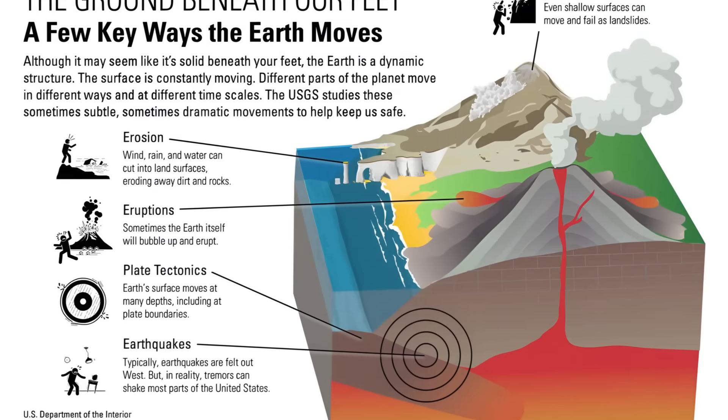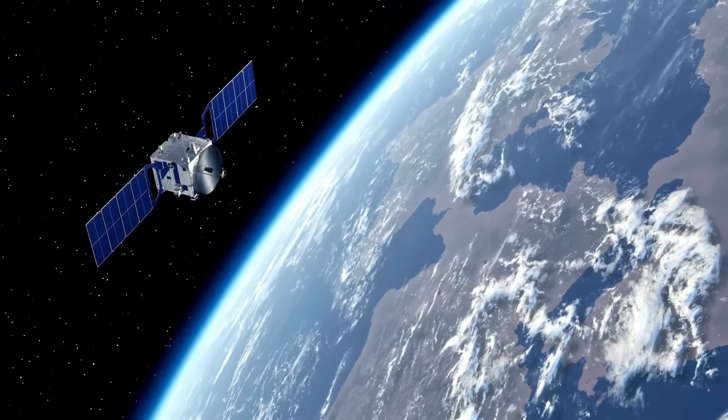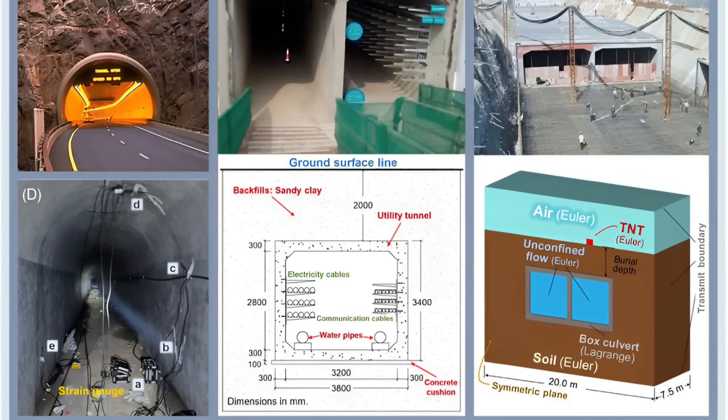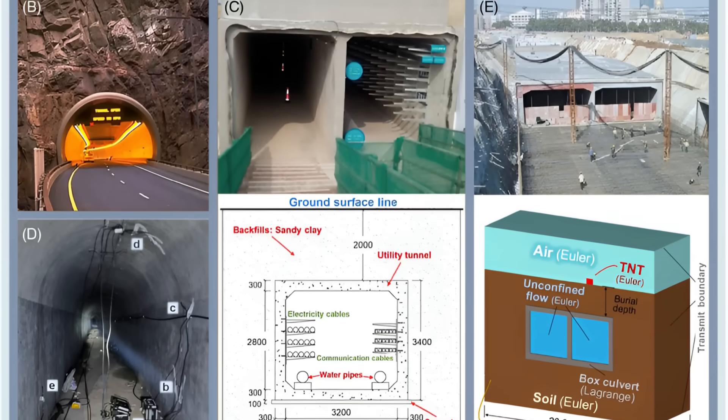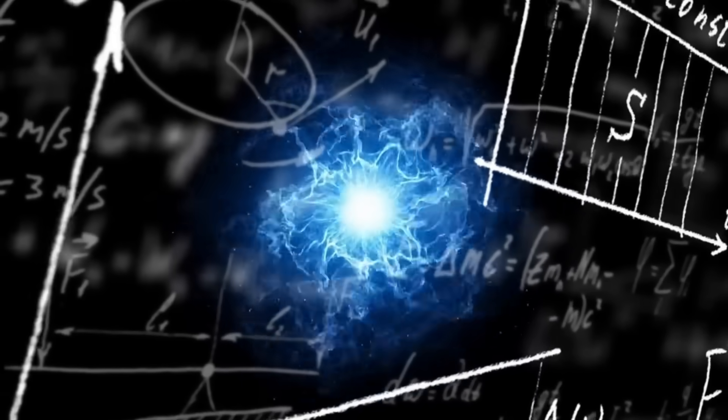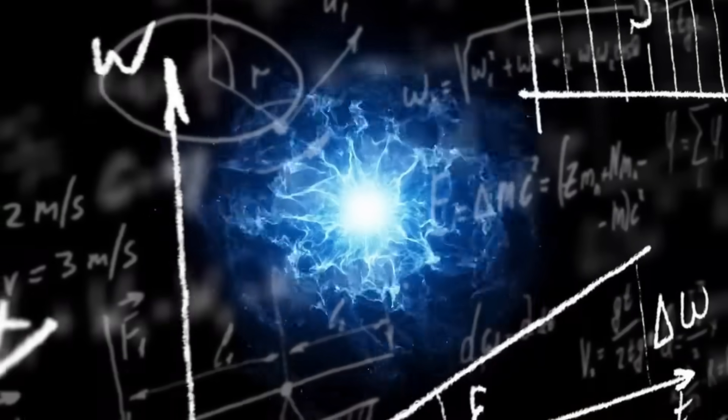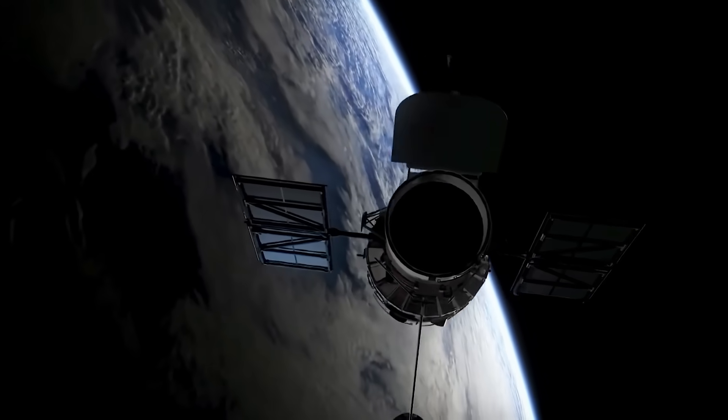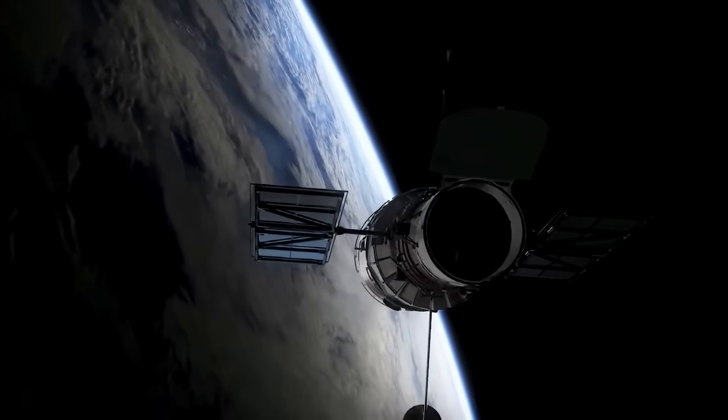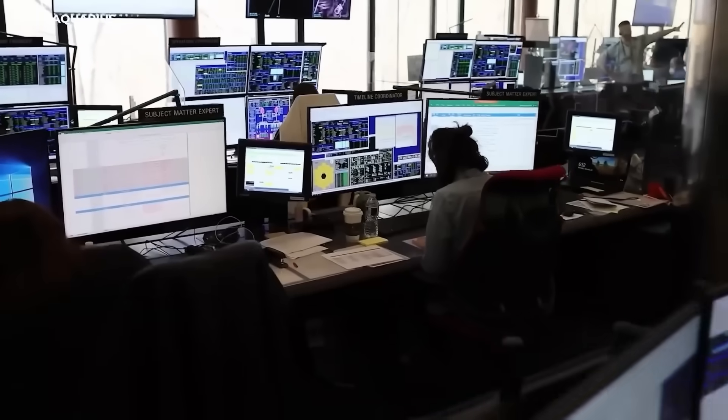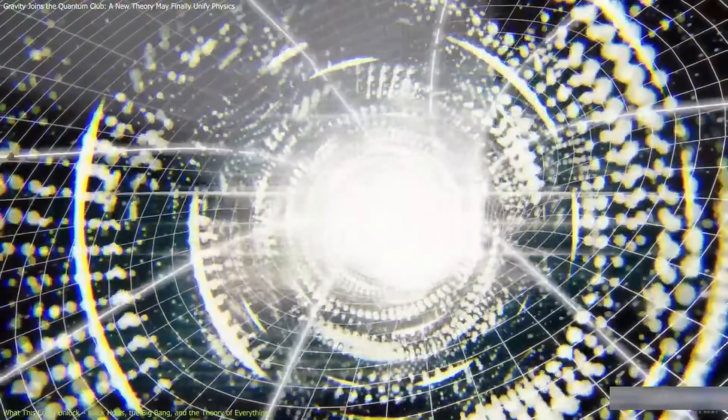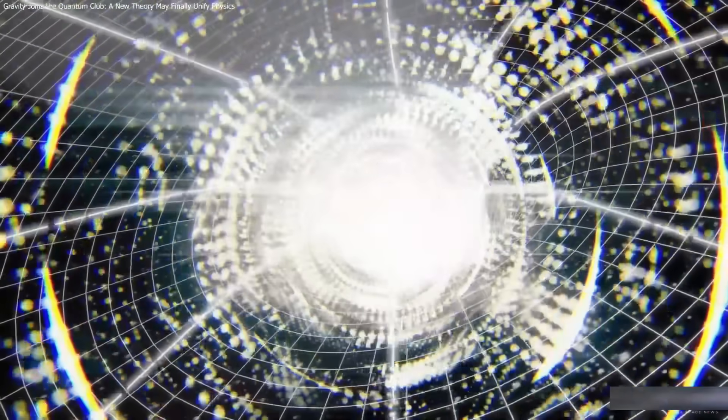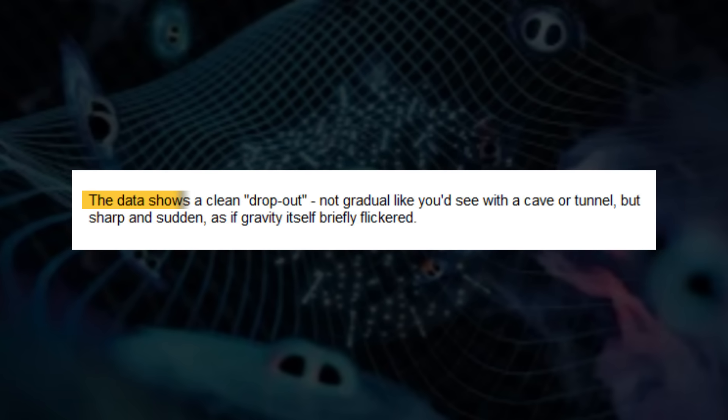Einstein's general relativity brilliantly explains gravity at the scale of planets and stars. But it breaks down at quantum scales, where the rules change dramatically. For decades, physicists have searched for the bridge between these two worlds. The elusive theory of quantum gravity. This void event could be the first experimental evidence showing where our current models are incomplete. It might be the missing puzzle piece that helps unite Einstein's spacetime with the quantum realm. And this is exactly why the scientific community is paying attention.